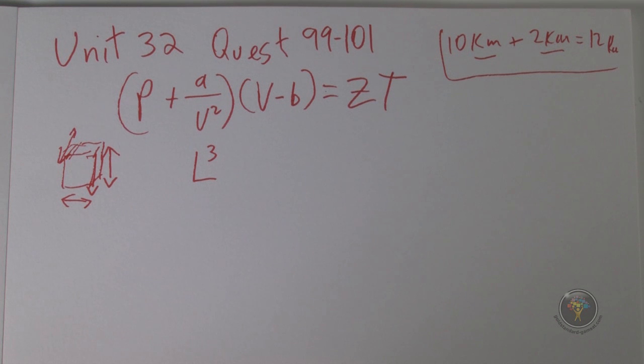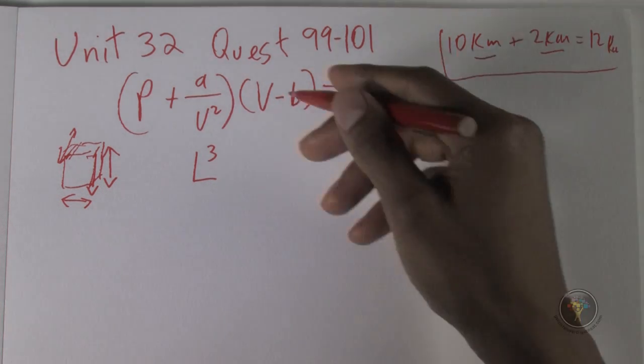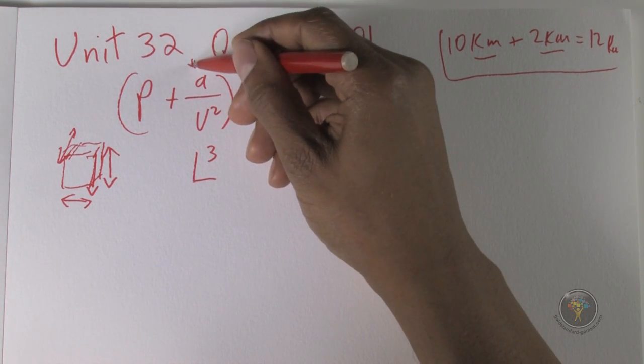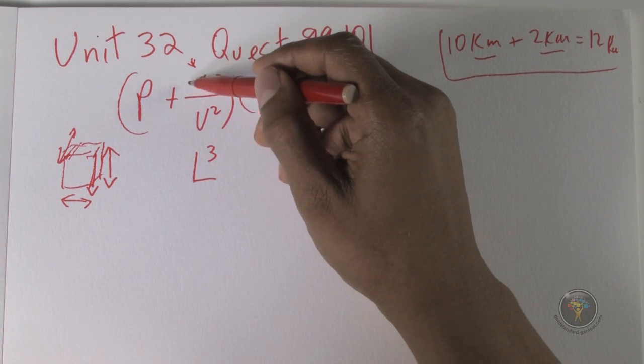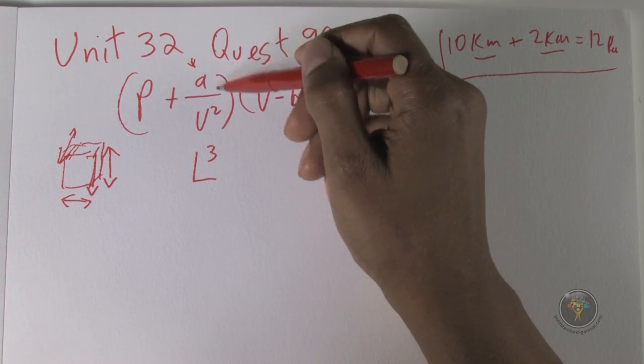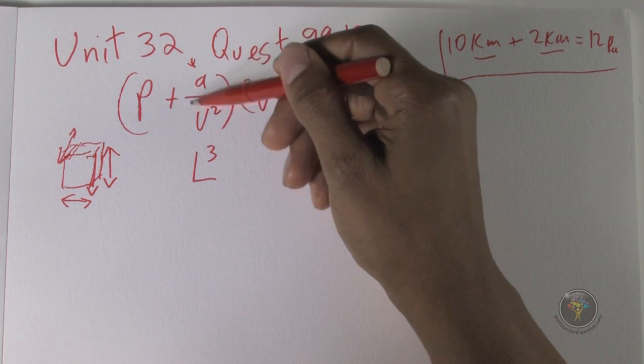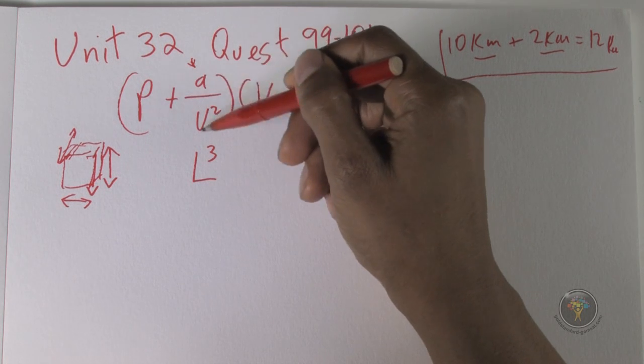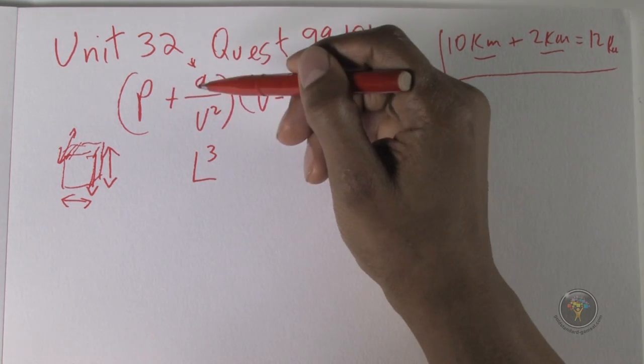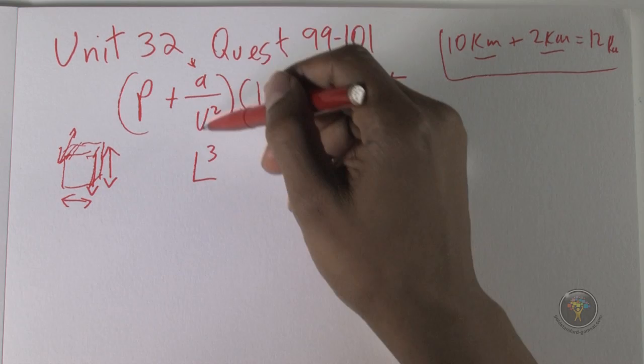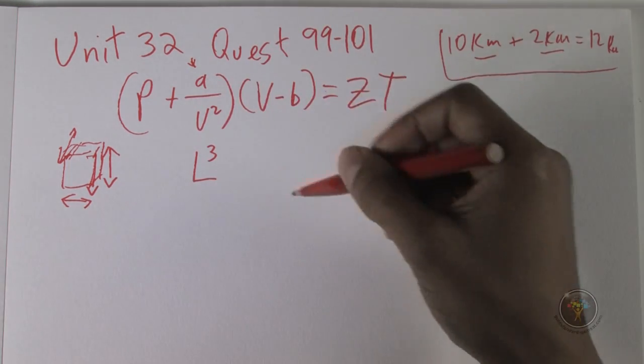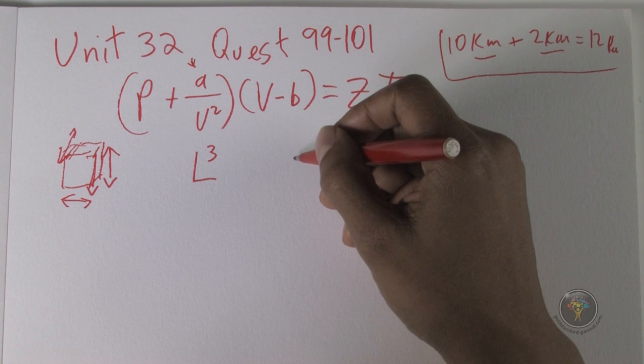The next question is the dimensions of A. When I look at A, I don't feel like I can calculate the dimensions of A just yet. So let's accept that A over V squared must be in dimensions of pressure because this whole thing is being added to pressure, so it must have the same dimensions as pressure. Keep that in mind. We're going to work on first understanding what are the dimensions of pressure.